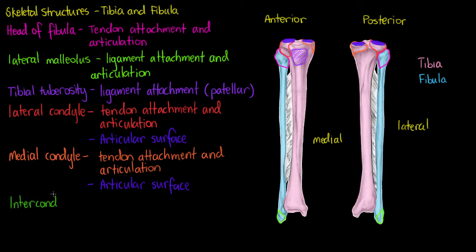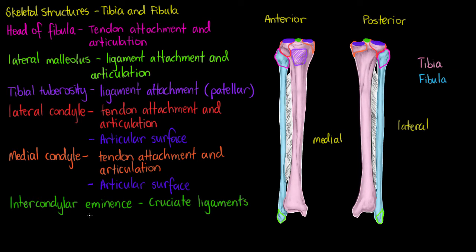In between these two condyles of our tibia there is a portion of bone that is not dedicated as the articular surface for the femur. It is actually a slight elevation toward the middle called the intercondylar eminence, highlighted here on the anterior and also on the posterior. Intercondylar meaning in between the condyles. You may also hear the intercondylar eminence referred to as the tibial spine.